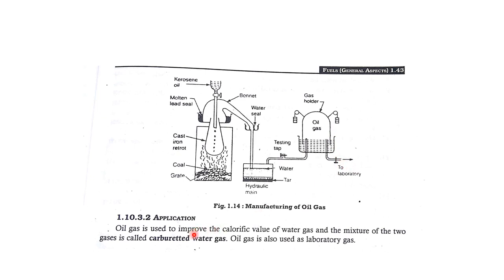The application of oil gas: it has a high calorific value and is used for carbureted water gas. It is used as a laboratory gas. To summarize, oil gas is manufactured by taking kerosene oil, which contains long chain hydrocarbons. The cracking process is applied to break them into small parts — methane, ethane, and hydrogen — because of their high calorific value. Methane and hydrogen are the main components of oil gas.